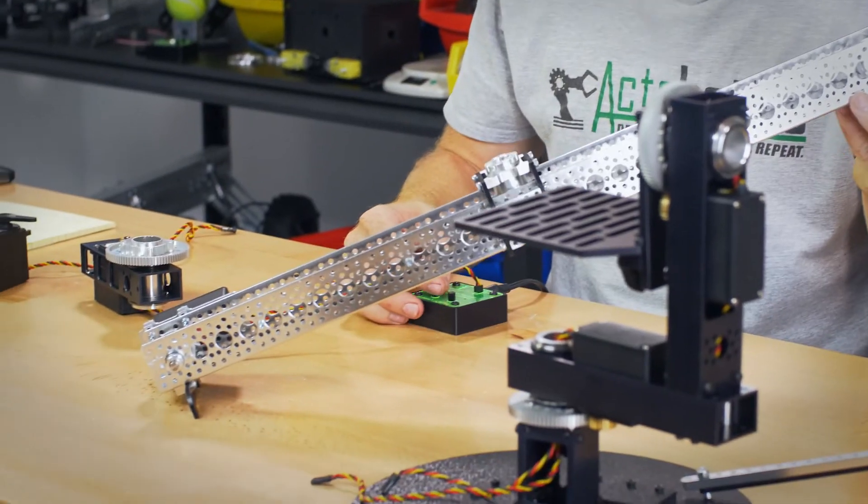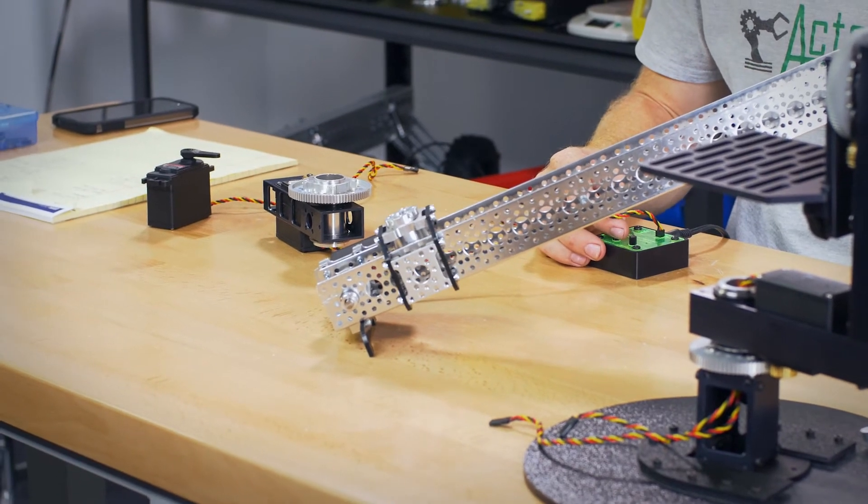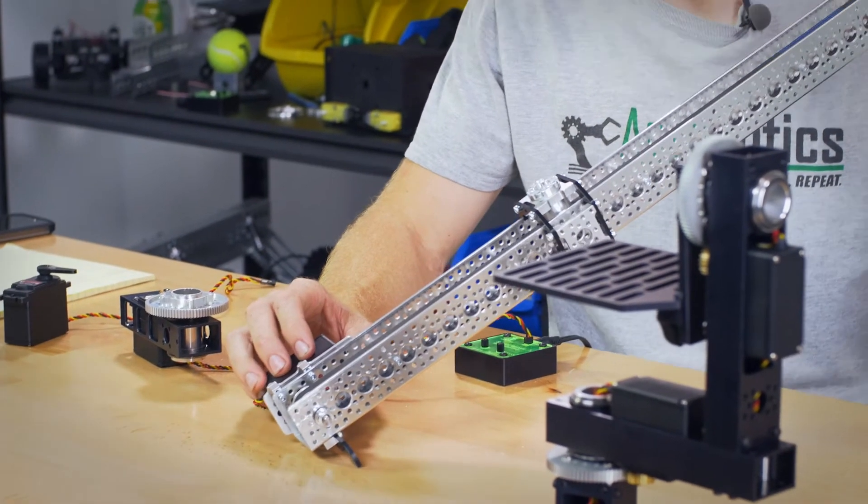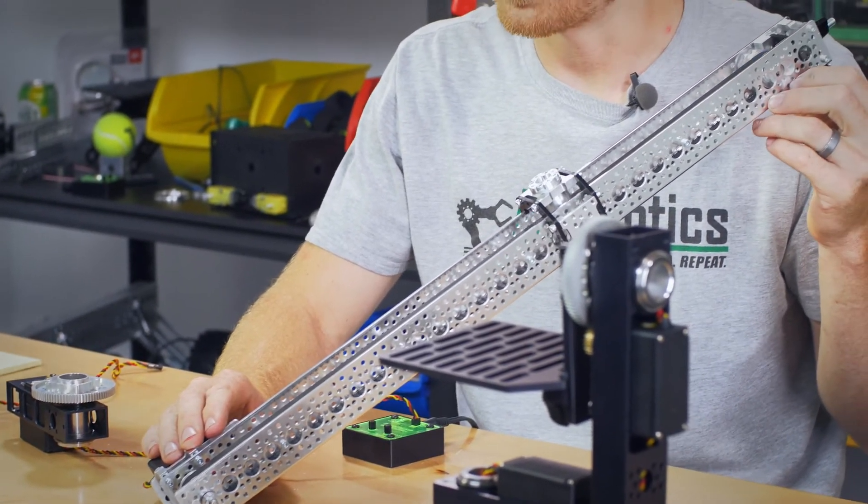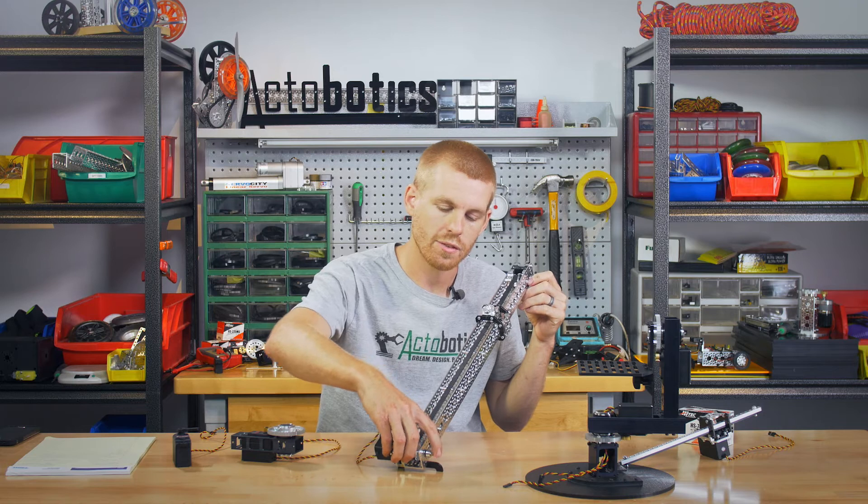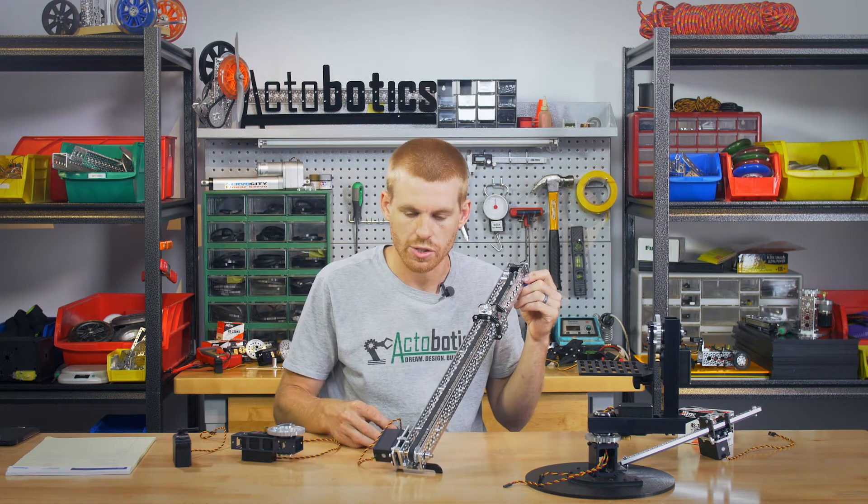But instead of using gears, we're using pulleys and belts. We use an XL series pulley and belt to drive this. We have the 785 servo mounted into a quarter scale servo mount. And then it's running a quarter inch D shaft that's coupled to the servo with one of our servo to shaft couplers.